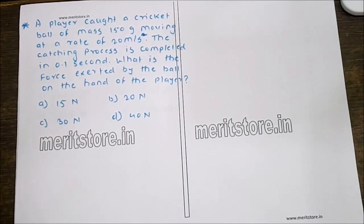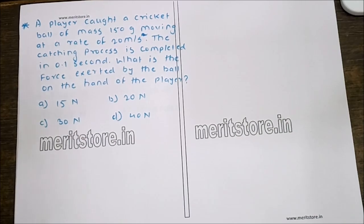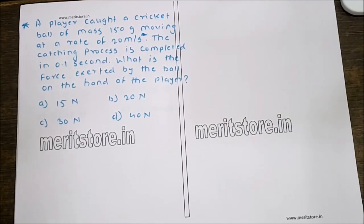A player caught a cricket ball of mass 150 grams moving at 20 meters per second. The catching process is completed in 0.1 seconds. What is the force exerted by the ball on the hand of the player? The options given are 15 N, 20 N, 30 N, and 40 N.